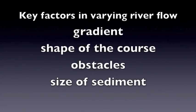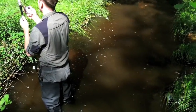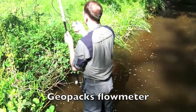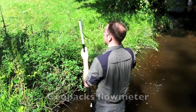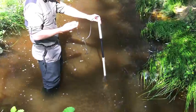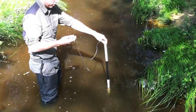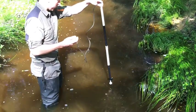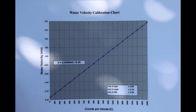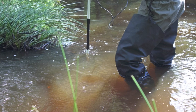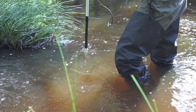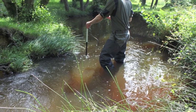The most important of these factors is probably gradient. This type of flow meter has a small propeller and a little gauge, and the gauge measures the number of revolutions. You can convert the number of revolutions to metres per second flow rate with this chart. To make a really accurate survey, we could have stretched a measuring tape across the river and taken regular measurements of flow rate at regular intervals and at regular depths.